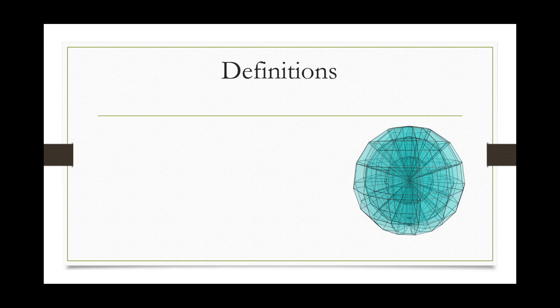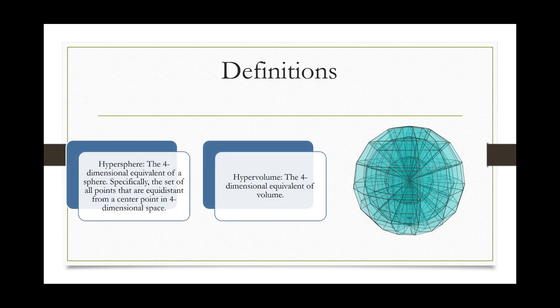First of all, what is a hypersphere? A hypersphere is the four-dimensional equivalent of a sphere. More precisely, it is the set of points in four-dimensional space that are equidistant from some center point. What about hypervolume? Hypervolume is the analog of volume in four-dimensional space. Just like we have length in one dimension, area in two, and volume in three, hypervolume is the next step in that ladder that exists in four dimensions.